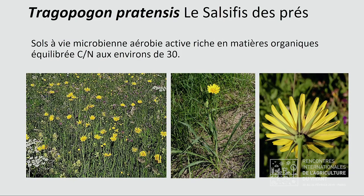Voilà aussi une plante qui indique un bon équilibre dans le sol, malgré qu'elle désigne déjà un début d'asphyxie par son système racinaire pivotant. La racine est charnue et pivotante — on la mange en légumes. C'est quand même une plante des très bonnes prairies de la Creuse notamment, mais on en trouve sur toute la France. C'est aussi une plante des prairies qui donne des vaches en bonne santé.